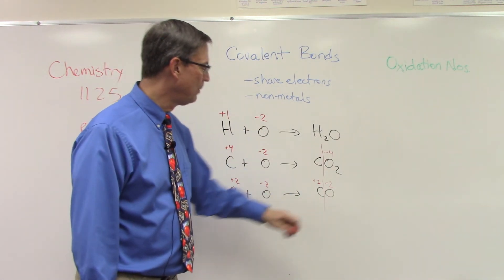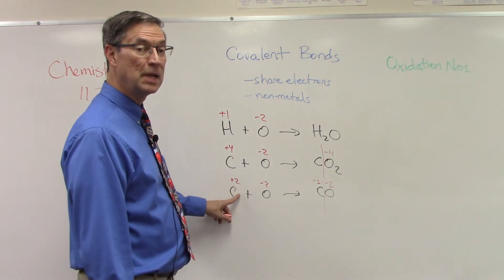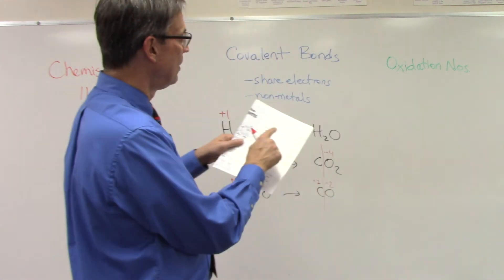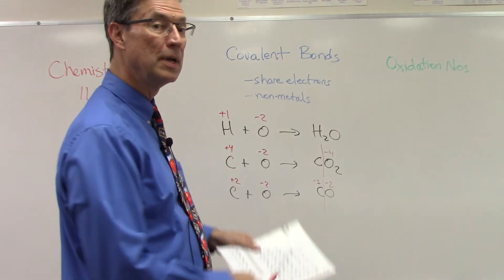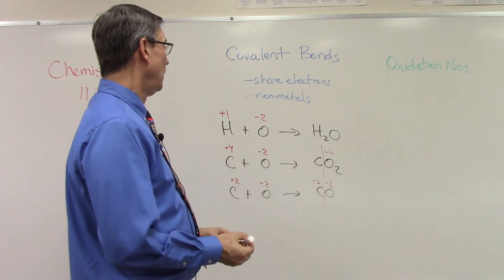But we know oxygen is negative two. So if we know it can form carbon monoxide, then in this case, we must be having the positive two. And if you look at your table for carbon, two is one of the possible charges.